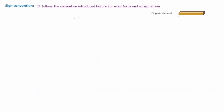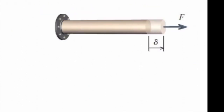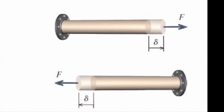Regarding sign convention: for force, tension is positive and compression is negative. For strain, elongation is positive and compression is negative. The same applies to deformation — elongation caused by tension is positive, and shortening caused by compression is negative. Note that the direction of elongation does not matter; whether it goes left or right, if it is an elongation, it is a positive deflection.